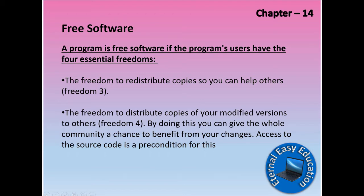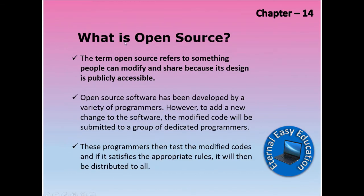Richard Stallman designed these four freedoms to establish the free software concept. Open source refers to something people can modify and share because its design is publicly accessible. Open source software is developed by a variety of programmers. However, to add a new change to the software, the modified code is submitted to a group of dedicated programmers. These programmers then test the modified code, and if it satisfies the appropriate rules, it will be distributed to all.